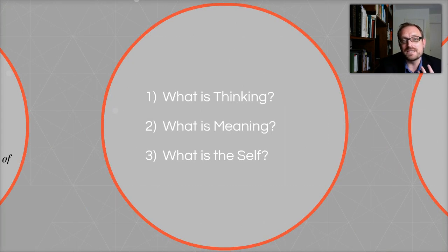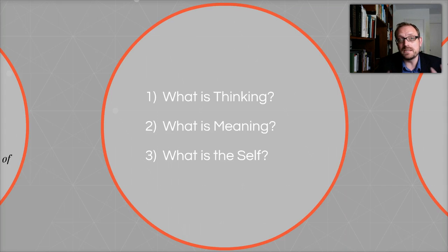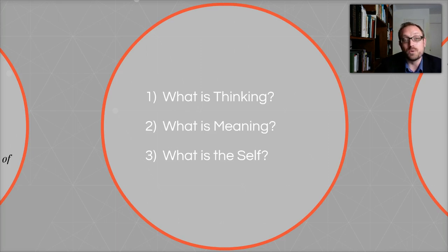Philosophically, when someone says we should think for ourselves, we can ask: what exactly does it mean to think at all? What does it mean to have meaning? And what is the self — what does it mean to be an individual? These questions are not directly related to a critical thinking course, but they're an example of how we need to think creatively about topics, breaking them down piecemeal to understand what thinking, meaning, and the self really are.